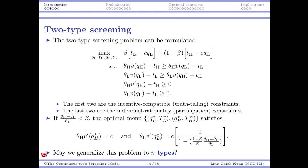The two-type screening model can be formulated with two contracts — a menu of two contracts, one for the high type and one for the low type. This is optimal by the revelation principle. Given that the high type and low type choose contracts (T_H, Q_H) and (T_L, Q_L) respectively, we have an expected profit. The first two constraints are incentive compatibility or truth-telling constraints, and the last two are individual rationality or participation constraints ensuring each type earns non-negative utility.